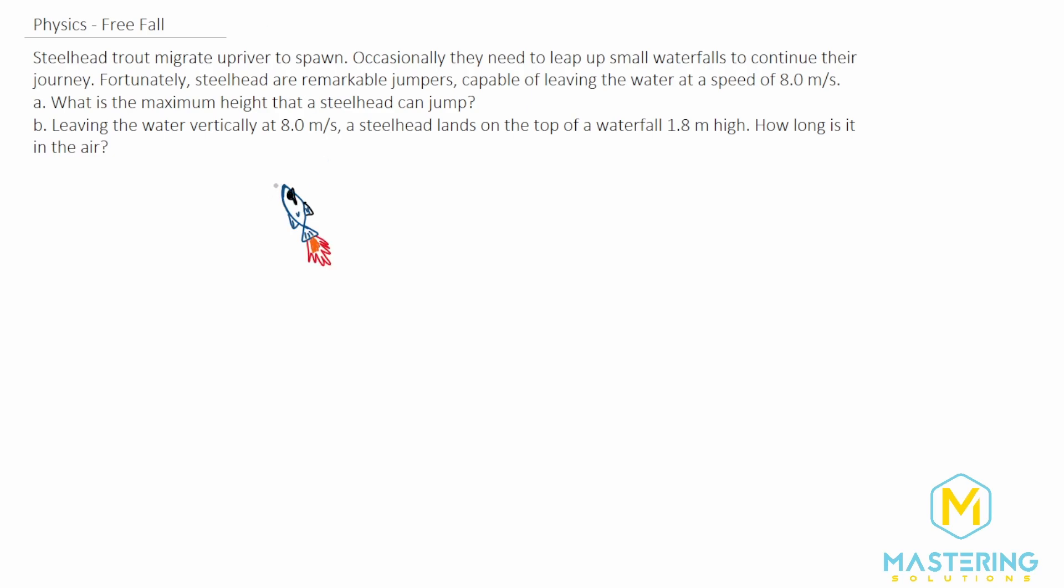We have our trout here and it's a really good jumper. The trout is leaving the water and coming up essentially vertically. At the very top of the jump, V final is actually zero meters per second because it's going to stall for just a split second in the air and then start to fall back down. Down here the V initial is 8 meters per second. So we need to figure out for part A how high it can jump.